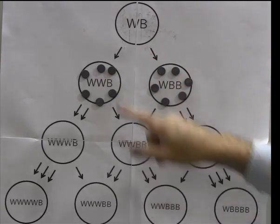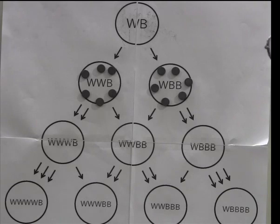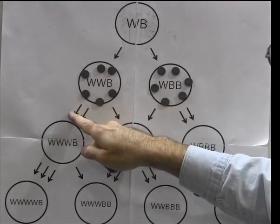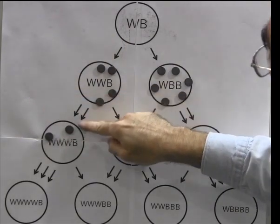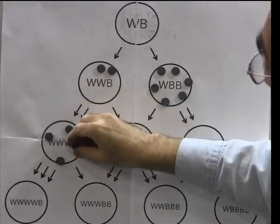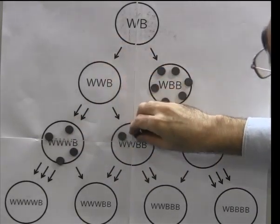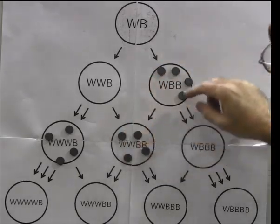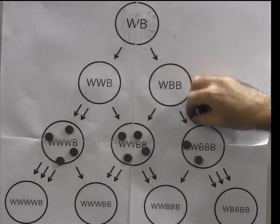Now at each one of these sites we have six chips and we have three outgoing arrows. 6 divided by 3 is 2, so we're going to send two chips from each of these nodes along each of the arrows. So here we're going to have two chips along this arrow, two chips along that arrow, and two chips along this arrow. Then from this site we're going to send two chips along that arrow, two chips along this arrow, and two chips along that arrow.